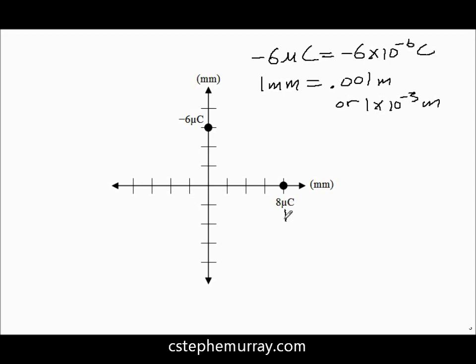So again, when you see micro, you just put in your calculator times ten to the minus six. When you see mille, you put times ten to the minus three.